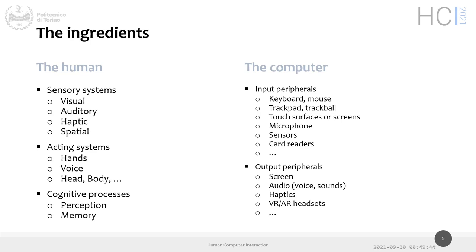These two main ingredients — user and computer — have their own structure and peripherals. Humans can interact with the system through their sensory systems: sight, hearing, and touch. They can provide inputs to the system through movements — hands that move the mouse, press keys, swipe on surfaces — and through voice. With game consoles there are many games where you interact with your posture and movements in front of a camera. There's a lot of study in these areas.